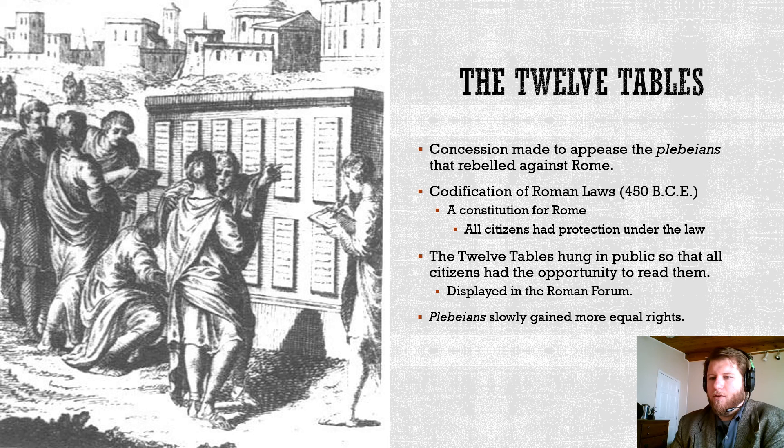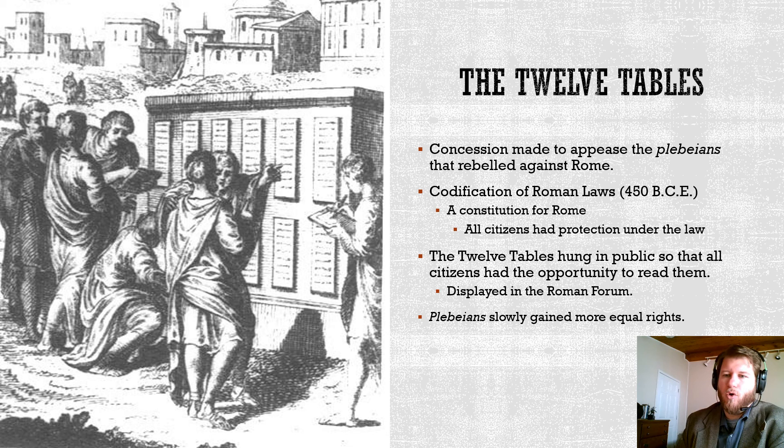The Twelve Tables are displayed in the Forum in Rome, which is the central marketplace. If you remember when we discussed Greece, we talked about the Greek Agora — the marketplace of a Greek city-state. In Rome, it's the Forum. That's the marketplace, the center for politics — everything. It's the heart of Rome. Over time, the plebeians do begin to gain more equal rights.